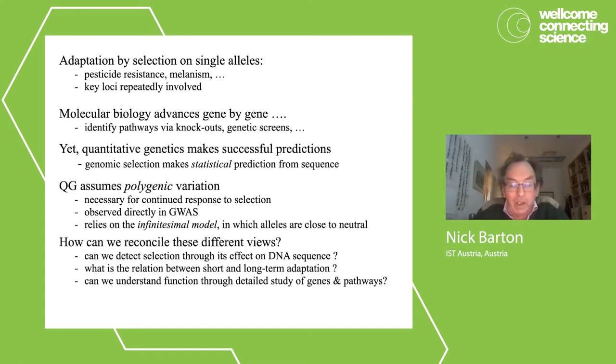So how do we reconcile these different views, the single gene view, the dominant view I think, versus the quantitative genetic view? And indeed, can we reconcile them? Can we fulfill our dreams of being able to simply look at samples of DNA sequences and identify the sites in the genome which are under selection?